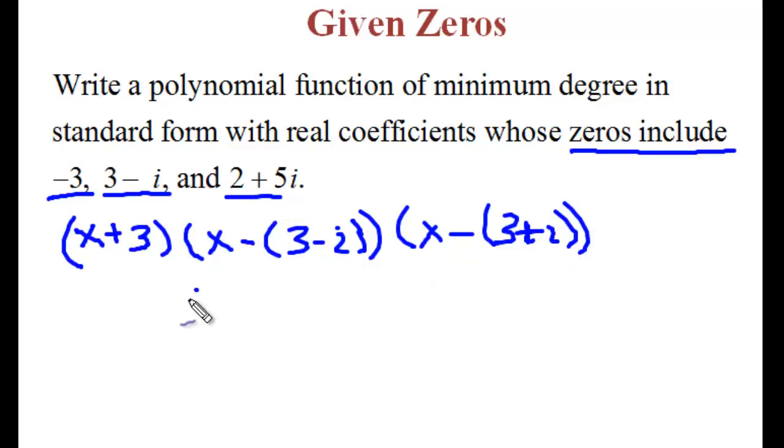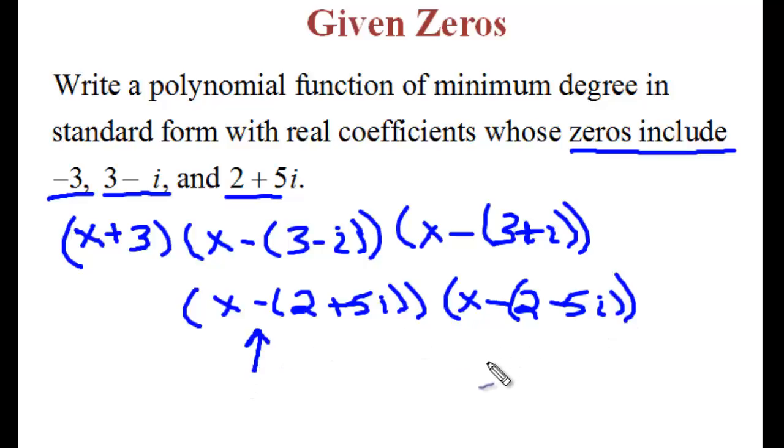And again with the 2. So moving down here, these are all factors. We have x minus 2 plus 5i and its complex conjugate pair, x minus 2 minus 5i. Notice that the minus sign for the x doesn't change. It's the plus and the minus within the complex number that changes. Now once we have this, we can multiply it all out.